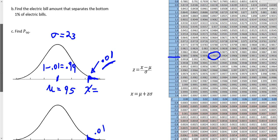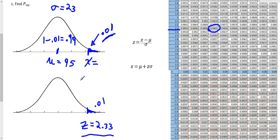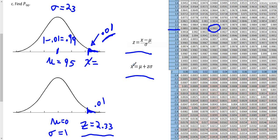We're not looking for a value from the standard normal distribution; we're looking for a value from the original distribution. We got Z = 2.33 from the standard normal, which has a mean of 0 and a standard deviation of 1. What we need to do is convert this Z value to an X value. Before, we used Z = (X − μ)/σ to go from X to Z. This is the inverse: X = μ + Zσ. You just solve for X by multiplying both sides by sigma and adding mu to both sides.